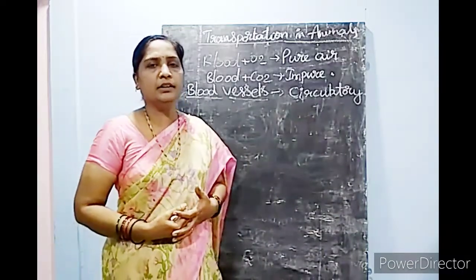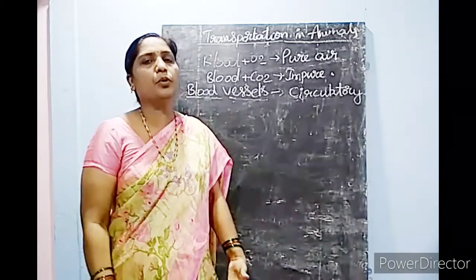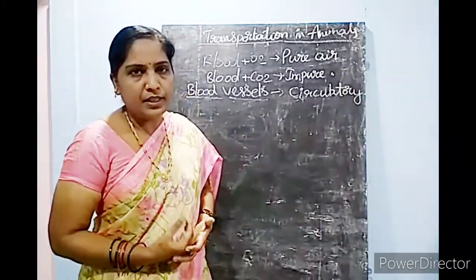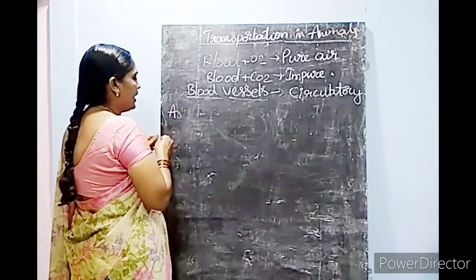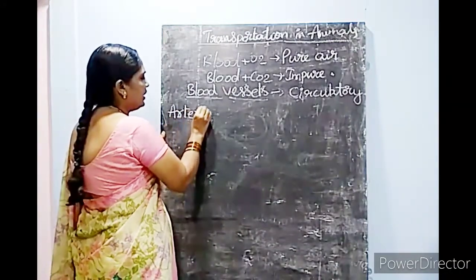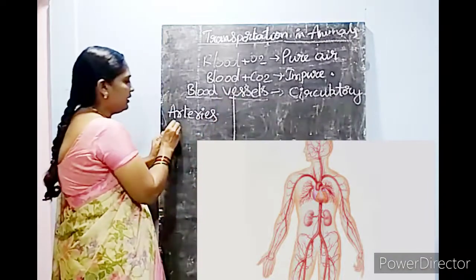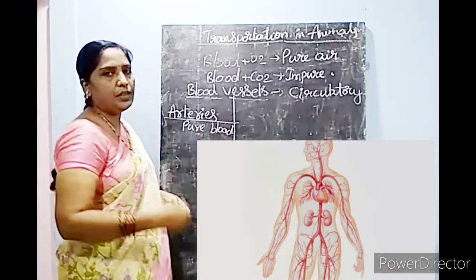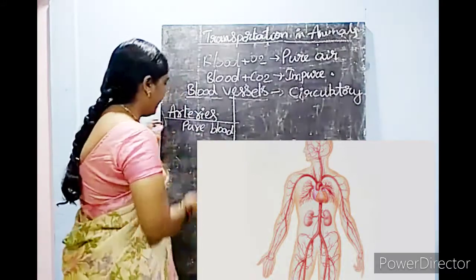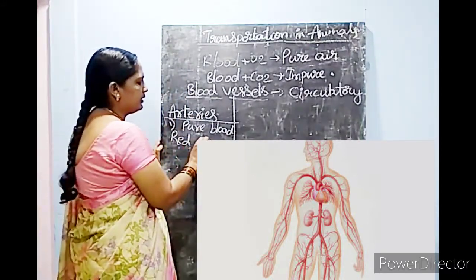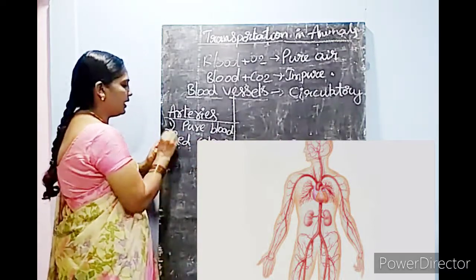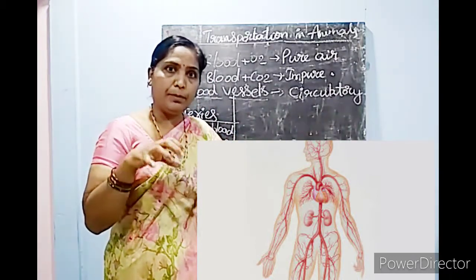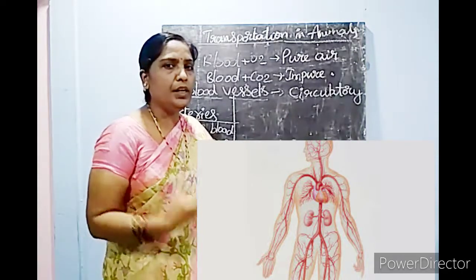The first type: from the heart, the pure blood has to be transported to each and every part of the body. That work is done by a type of blood vessel known as arteries. These arteries carry pure blood from the heart to different parts of the body. They are red in color, and the blood moves with high pressure in arteries.